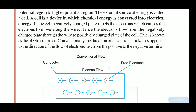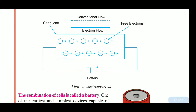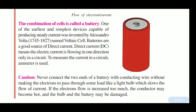This is known as electron current. Conventionally, the direction of current is taken as opposite to the direction of the flow of electrons — that is, from the positive terminal to the negative terminal. So current flows from positive to negative, while electrons flow from negative to positive. The combination of cells is called a battery.